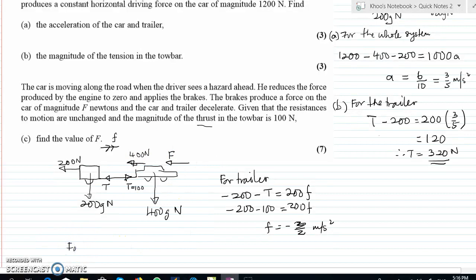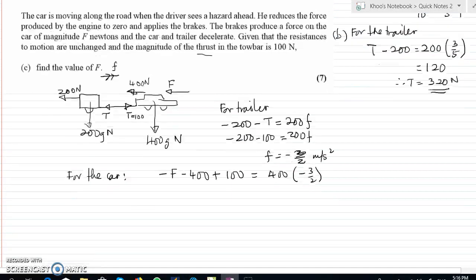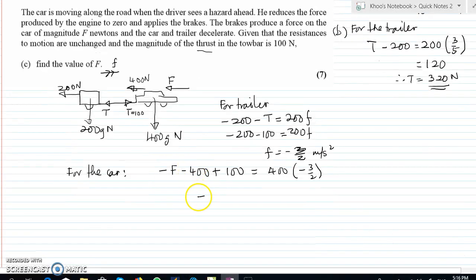So once we've got the deceleration, then we can find what is F. So for the car, next thing we need to resolve this. For the car, negative F negative 400, and notice T is in the forward direction, so you must add plus T or plus 100, equals to m which is 800 times a, in this case minus 3 over 2. Simplifying that we have minus F minus 300 equals to minus 1200, and that would give us F equals to 300 N.